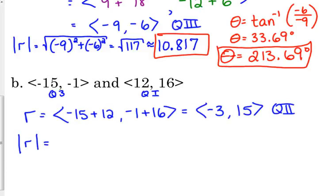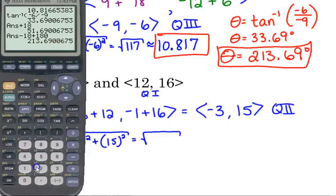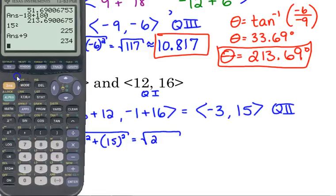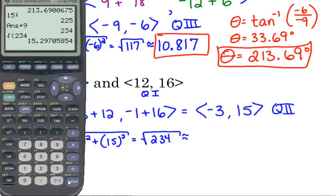Read the magnitude. Negative 3 squared plus 15 squared. That's 9 plus whatever 15 squared is. Is that 2.5? Maybe it is. So it's the square root of 234, which is approximately 15.297. There's our magnitude.